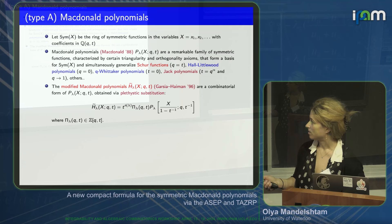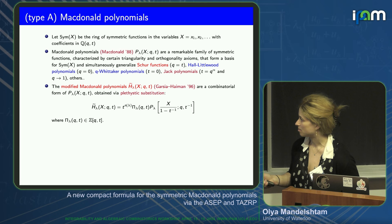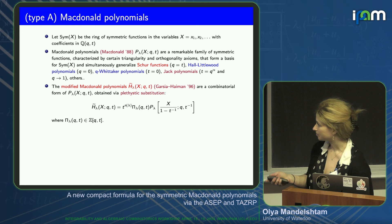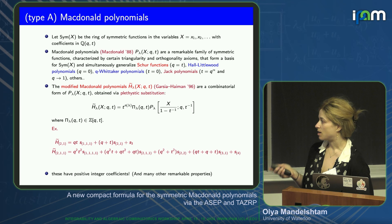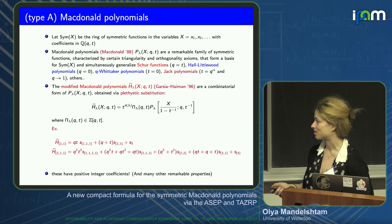The modified McDonald polynomials, denoted H-tilde_lambda, were introduced by Garsia and Haiman. They are a combinatorial form of P_lambda obtained by a formal operation called plethism. There is a constant factor depending on Q and T, and then a plethistic substitution of X over 1 minus T-inverse. They are called the combinatorial form because their coefficients are positive integers. In fact, these polynomials are Schur-positive, expanding with positive integer polynomial coefficients in Q and T in the Schur functions.